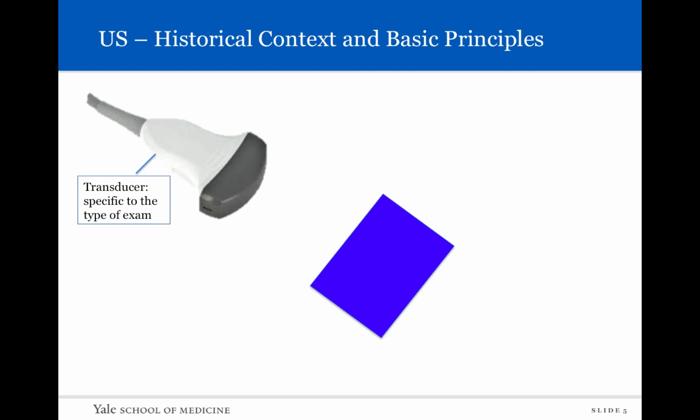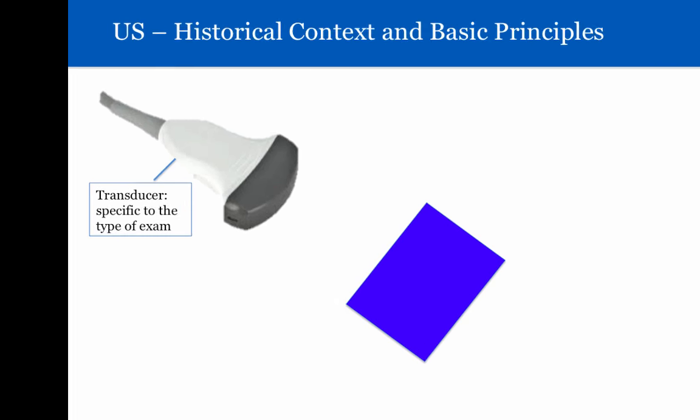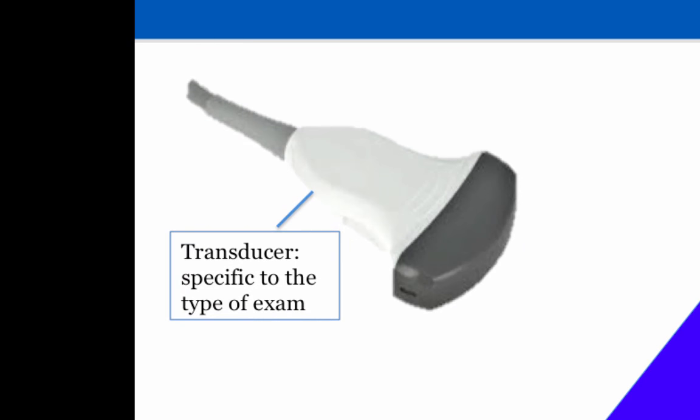So how does ultrasound work? There's some equipment needed. Firstly, you have a transducer, and there are several different types, each specific to the type of exam. Some transducers emit sound waves that penetrate deeper tissue, while some penetrate only more superficial tissue. Depending on what you want to see — whether it's a thyroid gland, which is superficial, or abdominal organs, which are deeper — you use the appropriate transducer.